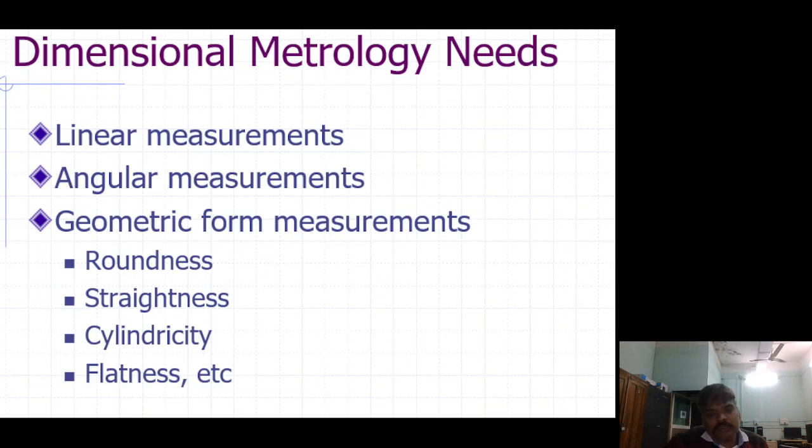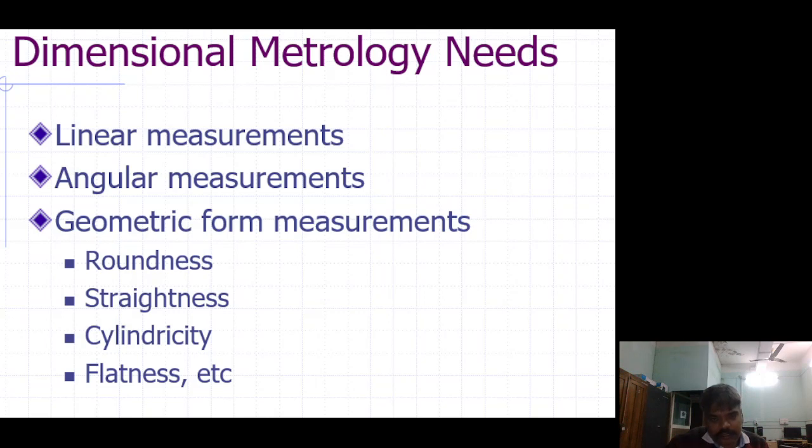Dimensional metrology needs linear measurements, angular measurements, geometric form measurements. In geometric form measurement: roundness, straightness, cylindricity, flatness, etc.